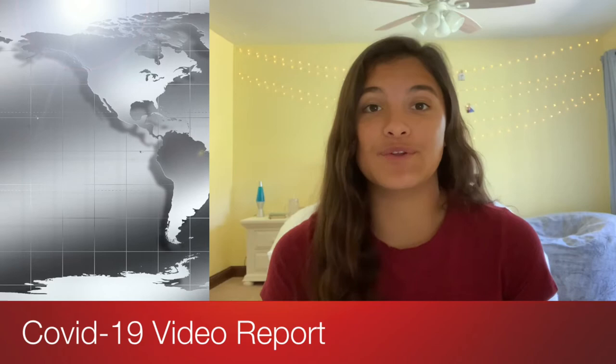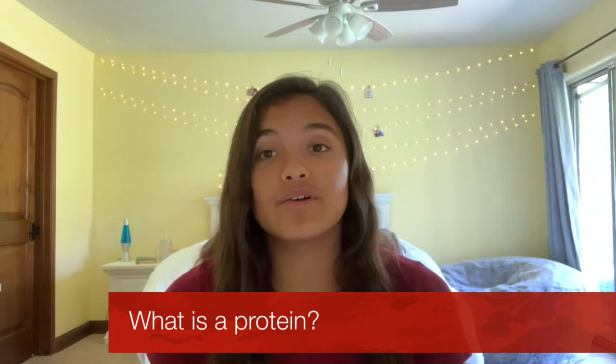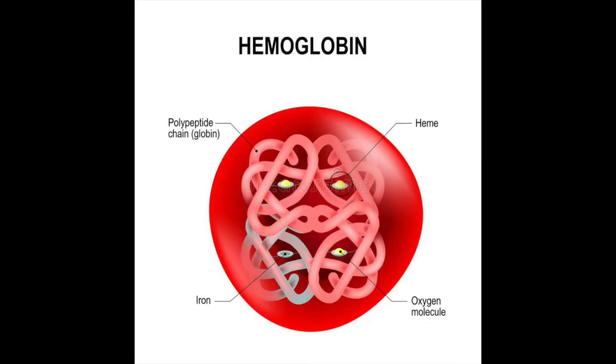First, we need to ask ourselves, what is a protein? A protein, to put it simply, is a long chain of amino acids. In our DNA, there are codes for all the different proteins that our body needs. For example, ferritin stores iron in our liver, and actin or myosin controls muscle contractions. One common protein that everybody knows about is hemoglobin. Hemoglobin takes oxygen from our heart to our organs and our tissues, and it removes the carbon dioxide from those and carries it back to our lungs.